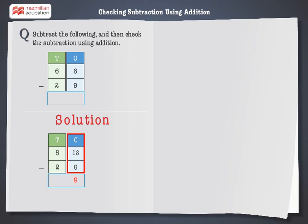Now subtract the digits at the tens place. That is, 5 minus 2, which is equal to 3. Hence, 68 minus 29 is equal to 39.